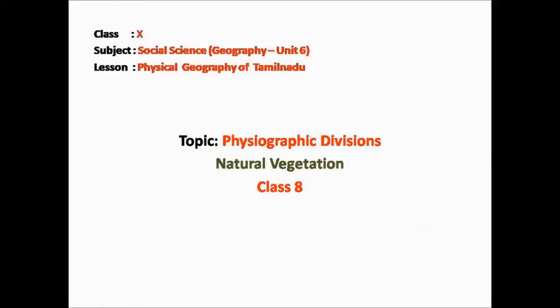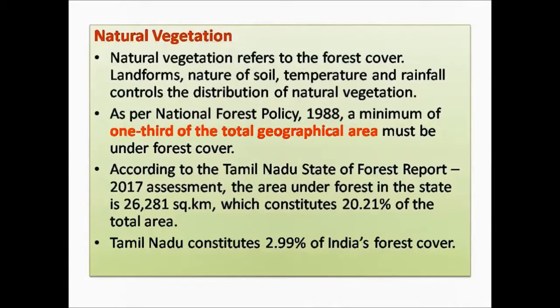Natural vegetation refers to a plant community which has grown naturally without any human support. We have seen forests with many large trees. Have you seen any human planting or sowing seeds in a forest, or watering the trees? No. These trees grow naturally under the climatic conditions of that region. This is called natural vegetation. Natural vegetation is also referred to as forest cover.